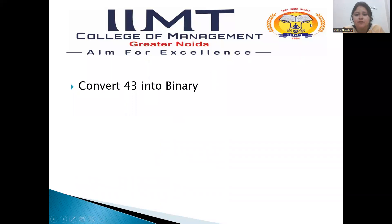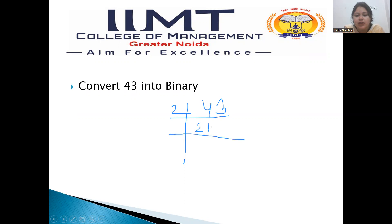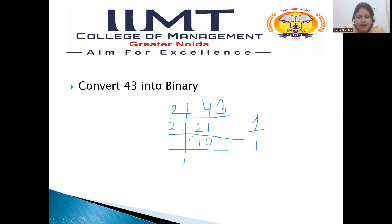Now let's do one more example — we will convert 43. How we will convert 43 into binary. So when divided by 2, it will go up to 21 times, because 22 into 2 is 44 which is more than 43. The remainder must be either 0 or 1. Now again, I will divide 21 by 2 — it will go 10 times and the remainder will be 1. Then I will divide 10 by 2 — it will go up to 5 times and the remainder will be 0.